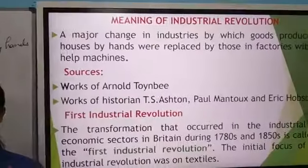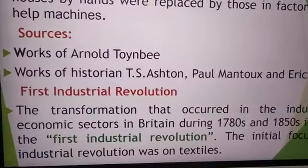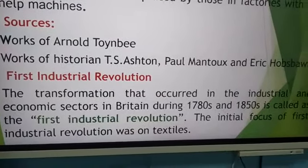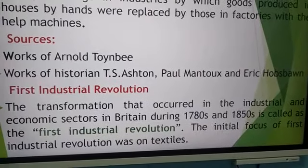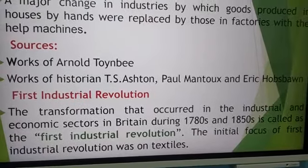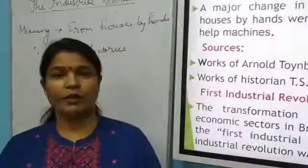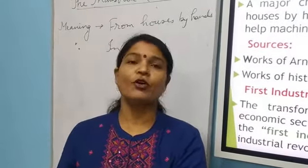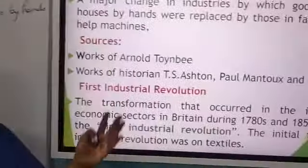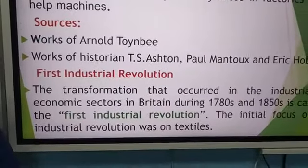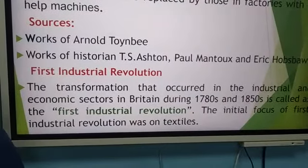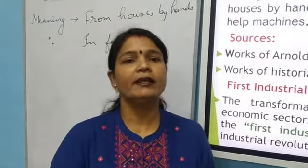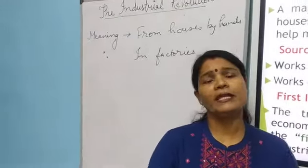The First Industrial Revolution was from 1780 to 1850. This happened in Britain, and the major change came in the economic and political sector. The change was industrial and economic in Britain from 1780 to 1850. In the beginning, the focus was mainly on textile industries.